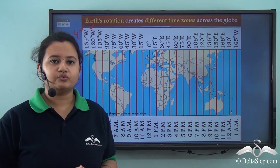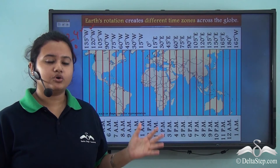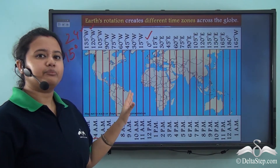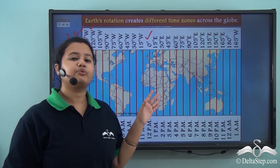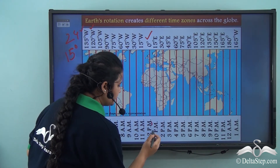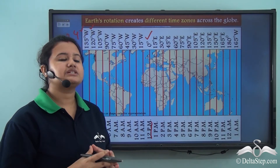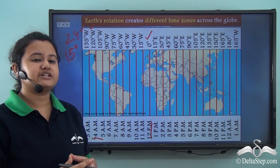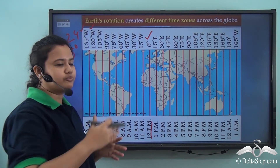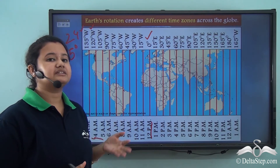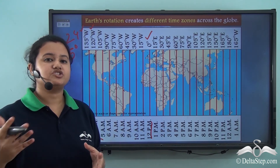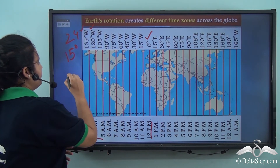A special longitude according to which the times of other longitudes are determined is known as the zero degree meridian or the prime meridian. If the sun is overhead the prime meridian, then the time according to the prime meridian will be 12 pm or noon. Longitudes lying to the east of the prime meridian will have time ahead of the prime meridian, whereas longitudes to the west will have time behind the prime meridian, with each time zone differing by 1 hour.